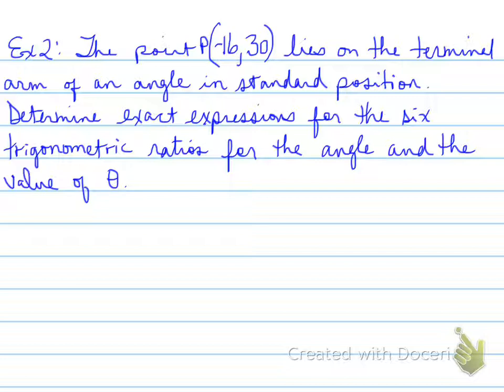Example number two. The point negative 16, 30 lies on the terminal arm of an angle in standard position. Determine the exact expressions for the six trigonometric ratios for the angle and the value of theta. So we need the six ratios, sine, cosine, and tangent, as well as our new three favorites, cosecant, secant, and cotangent. First of all, draw out the Cartesian plane and find point P. Point P is negative 16, 30, and it's found in the second quadrant.